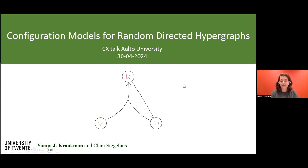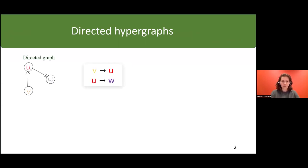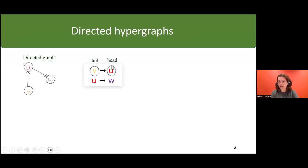This talk will be about configuration models for random directed hypergraphs. So let's first get into directed hypergraphs. Directed hypergraphs are a generalization of directed graphs. In a directed graph we have edges which have a tail and a head component, and the tail and the head are both one vertex.